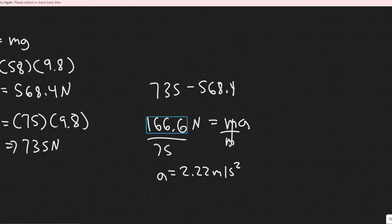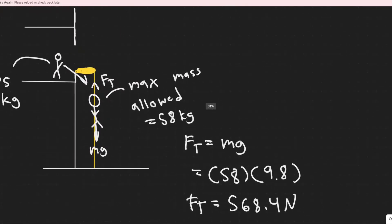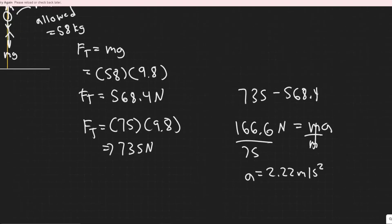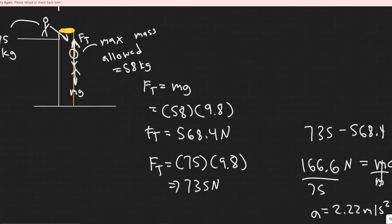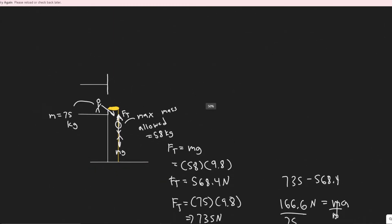But notice, we need to make up 166 newtons of force in this direction. We need to make 166 newtons of force in this direction, or else it will break. And we know he weighs 75 kg. Therefore, to make it up, if he travels at an acceleration of 2.22 meters per second squared, then it's going to counteract that, and he'll be able to actually go down it, or it won't break if he's on it.